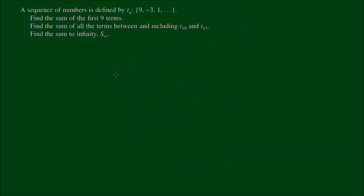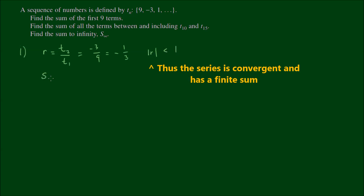For the second question, a sequence is defined as: 9, negative 3, 1, and so on. Find the sum of the first nine terms. To find the common ratio r, we divide successive terms: negative 3 divided by 9 equals negative one-third. We note that the absolute value is less than one.